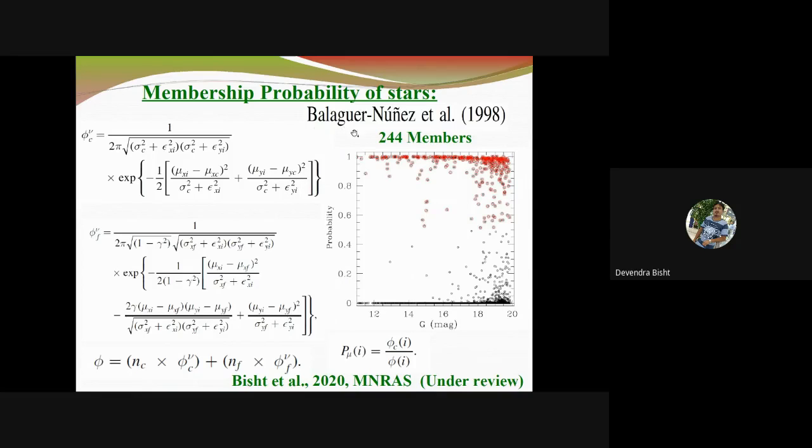We used the method given by Vasilevskis. According to this method, every star has two frequency distribution functions: the cluster distribution function and the field star distribution function. This is the total distribution function, where Nc and Nf are the normalized number of cluster members and field members. The total probability of the i-th star is the ratio of phi_ci divided by phi_i. We have used this method recently for a sample of binary clusters also.